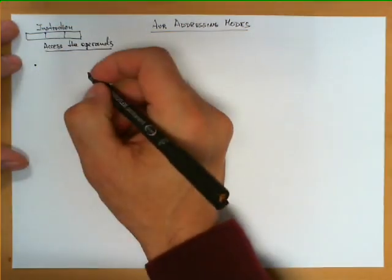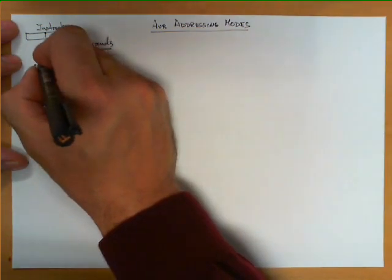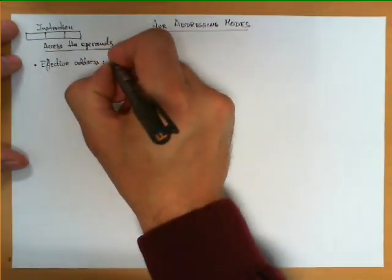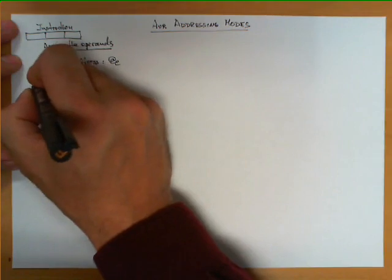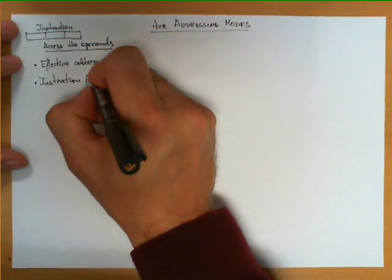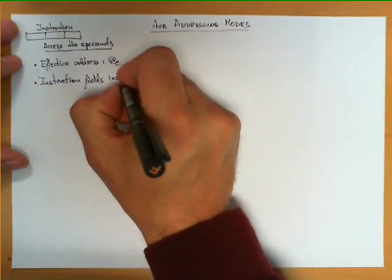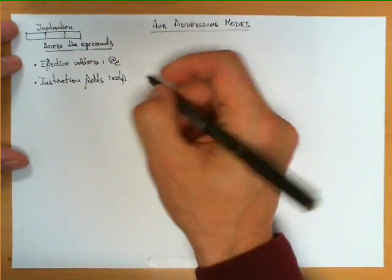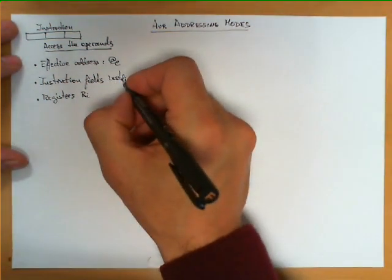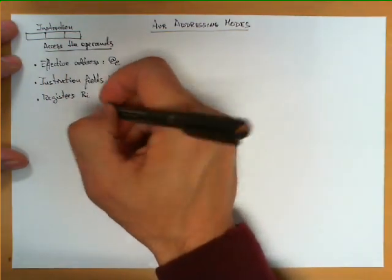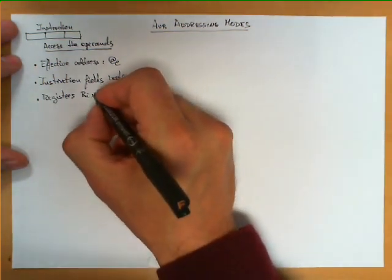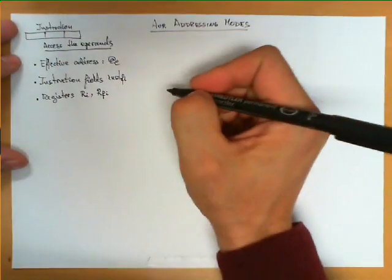Before proceeding, let's describe certain notation we're going to be using. The address of the operand we're going to call the effective address, and we're going to represent it by A sub e. The instruction fields, which are what we're going to be interpreting, we're going to denote them by inst sub f sub i. Registers we're going to refer to as R sub i, and in some cases the field of the instruction is going to encode the name of a register — we refer to that register as R sub f sub i, the register specified by field i found in the instruction.